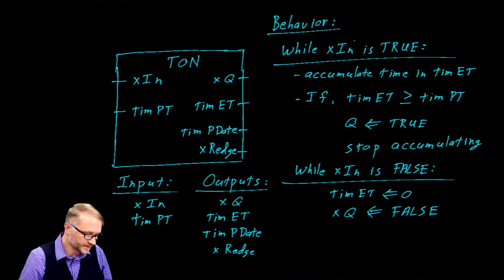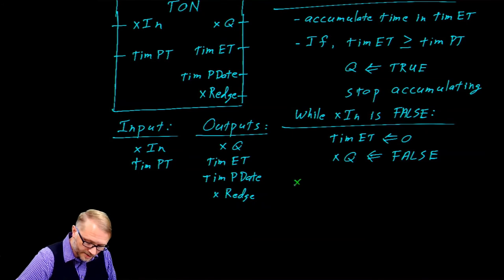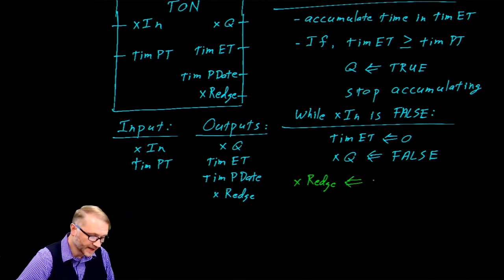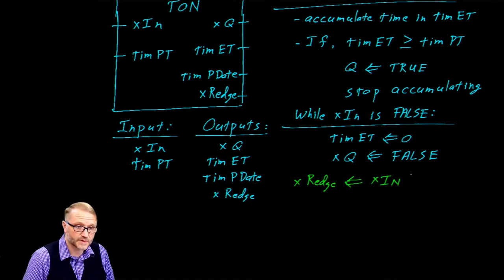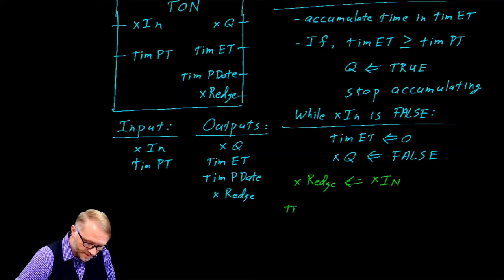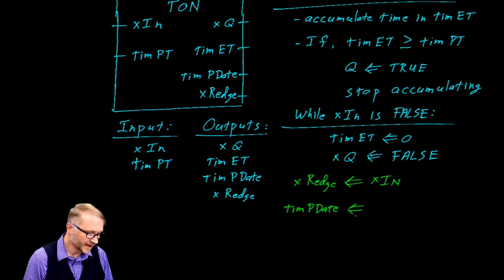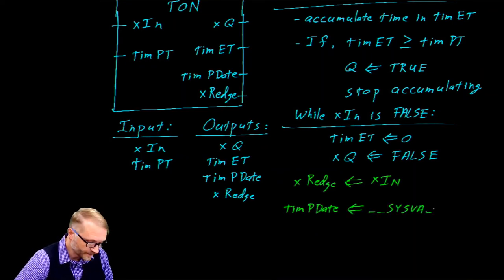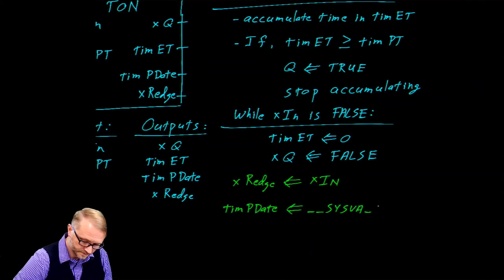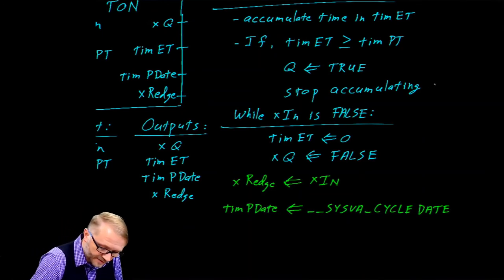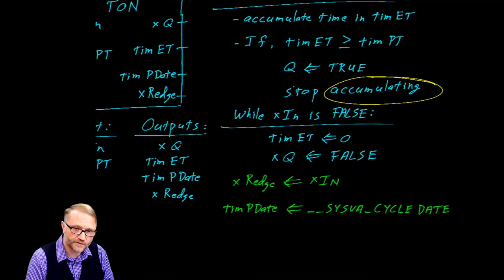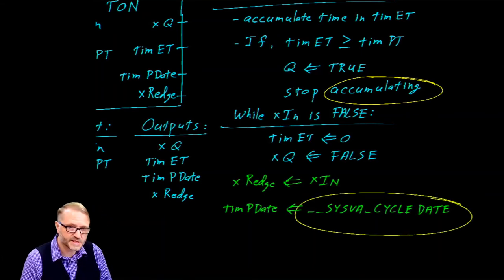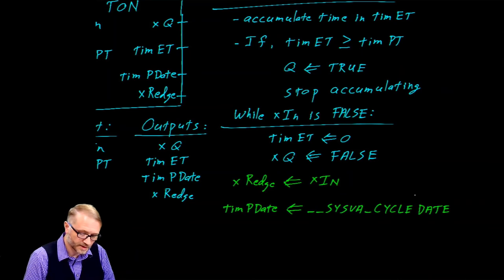There are two more behaviors. Our boolean reg is assigned the value of boolean in. And this next one is probably one of the most important: the time previous date is assigned the value of system cycle date. There are a couple of things going on here. I've been using the word accumulate — we haven't defined what that means. And we've now got this system variable in here, and we need to understand how those come together to accumulate time.